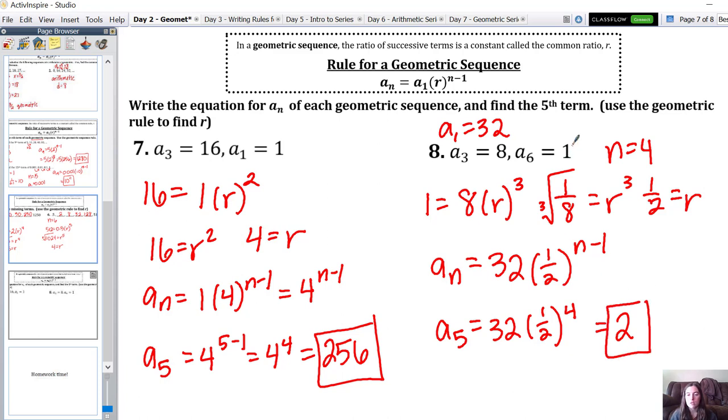Or you could have also worked backwards from a sub 6 and just multiplied by 2, but the same idea as what we did from a sub 1.